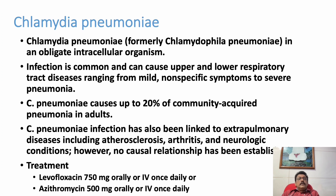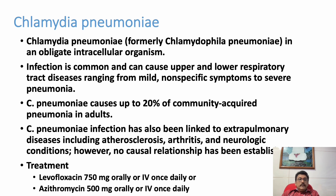Chlamydia pneumoniae is an obligate intracellular organism causing lower respiratory tract infection and non-specific symptoms leading to pneumonia. It accounts for 20% of community-acquired pneumonias. It can also produce extra-pulmonary diseases like atherosclerosis, arthritis, neurological problems, and sexually transmitted infections. Diagnosis via atypical serology or urine testing; treatment is levofloxacin 750 mg oral or IV once daily, or doxycycline.